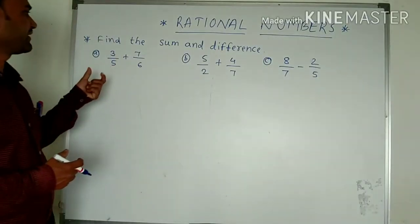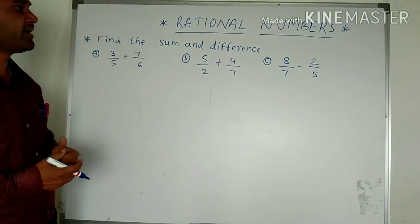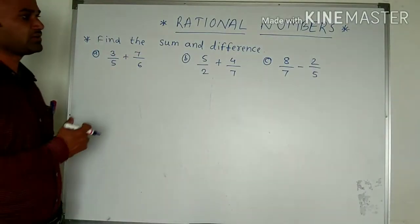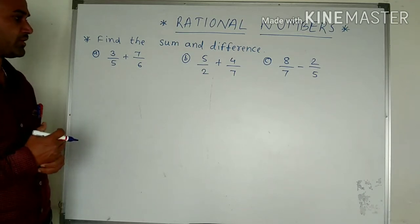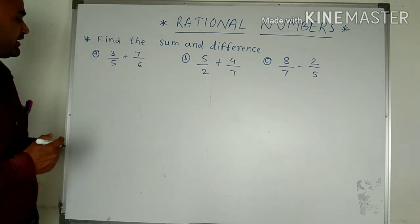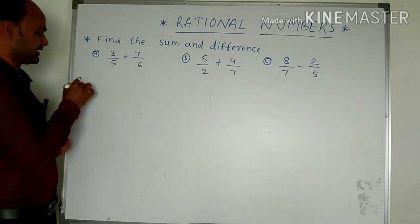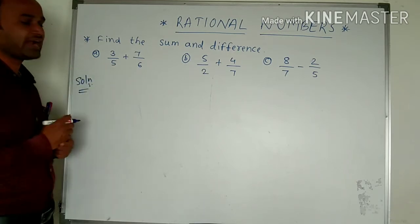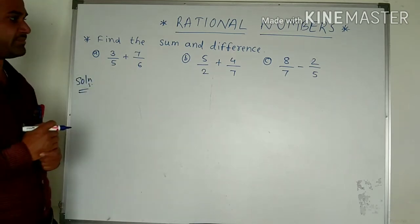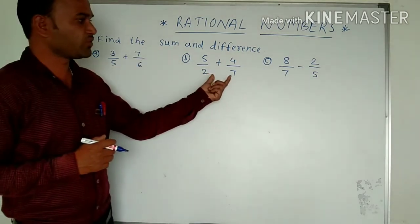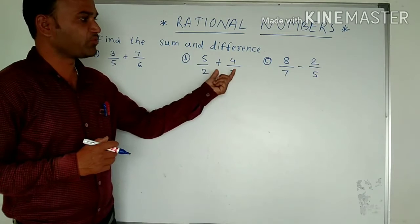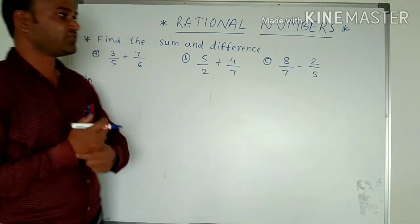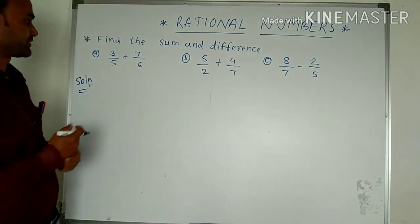Next, we can see here: find the sum and the difference. How to solve this type of problems? The first one, we have to add the two rational numbers and again we have to add one more rational number, and then find out the difference of the other rational numbers.